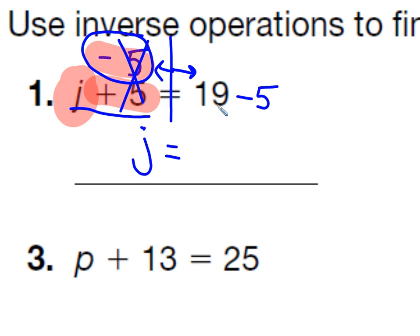On the right side, what is 19 take away 5? It would be 14. So our variable is J equals 14. And the way you can check that is you take this 14 and you plug it in for J. Is 14 plus 5 equal to 19? Yes, it is.